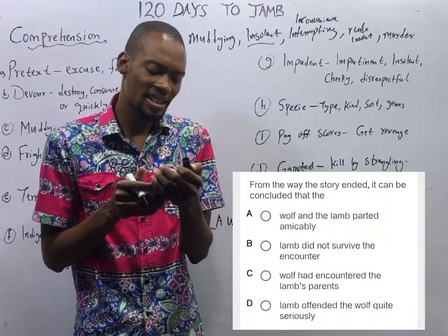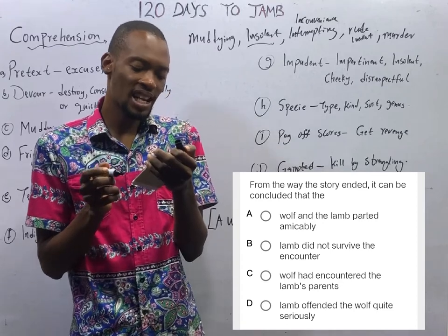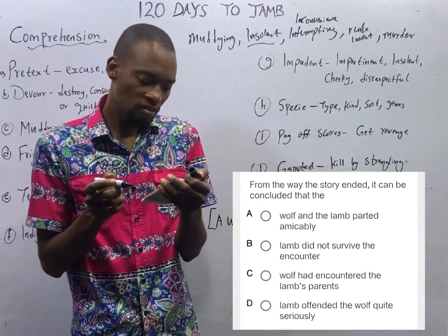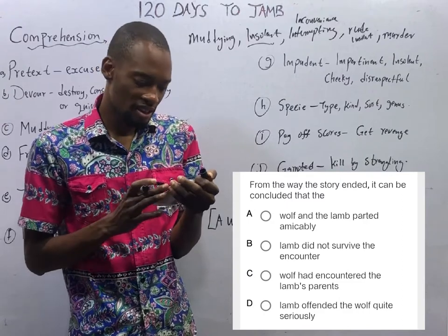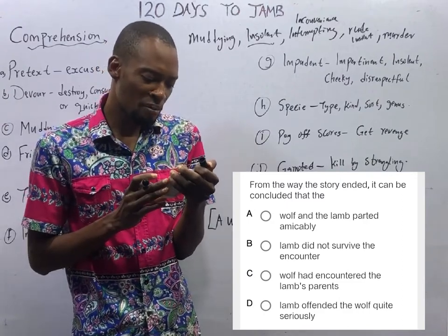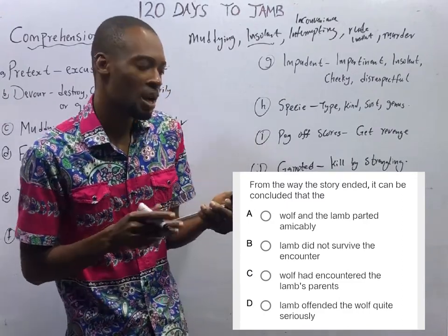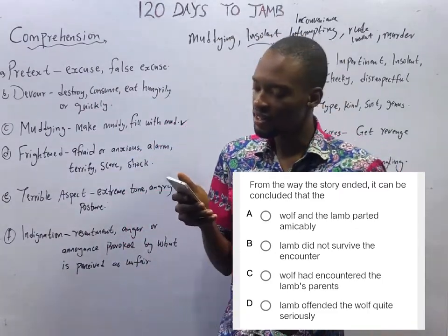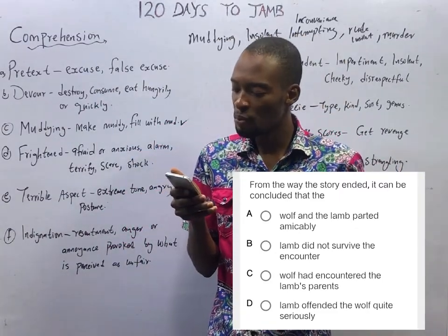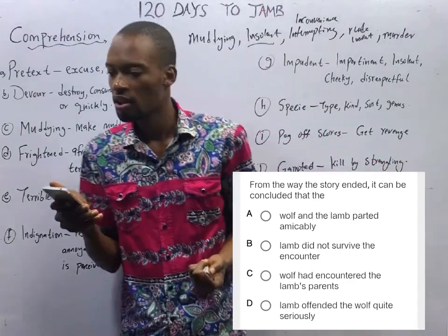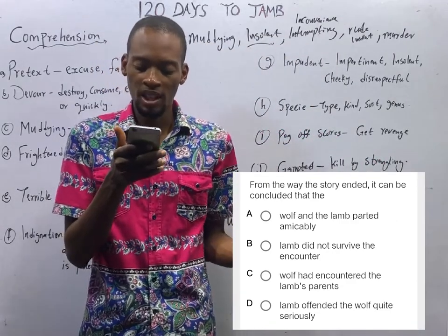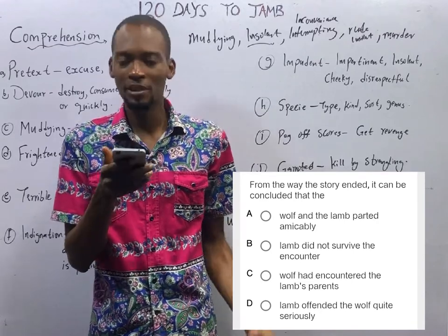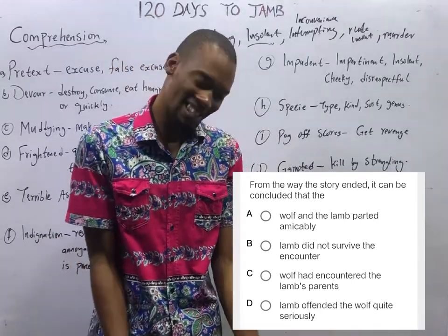From the way the story ended, it can be concluded that the lamb did not survive the encounter — Option B is correct. Option A — wolf and lamb parted amicably, meaning peacefully with no hostility — is not the case. Option C — the wolf had encountered the lamb's parents — the wolf never encountered the lamb's parents. Option D — the lamb offended the wolf quite seriously — the lamb did not offend the wolf.